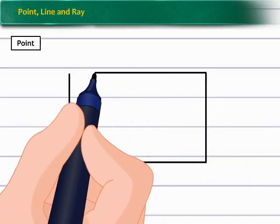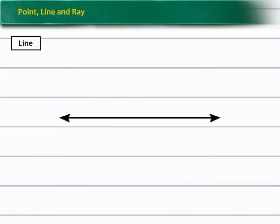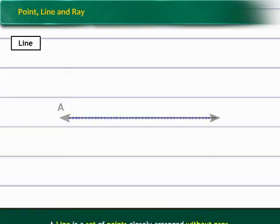Here one point is denoted by letter A and other by letter B. Two different points are called distinct points. Observe the given figure. As the space between the points decreases, they join to form a line.